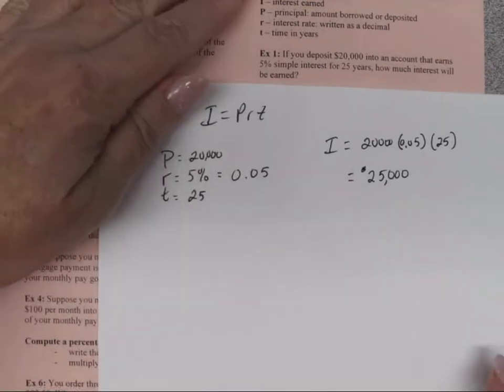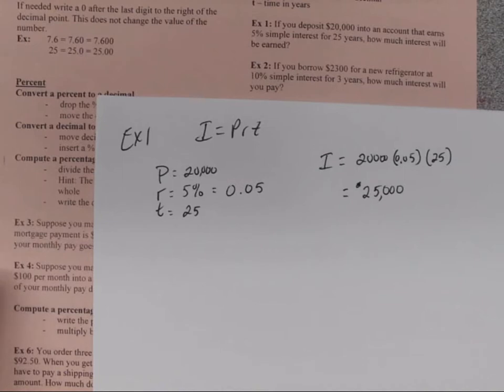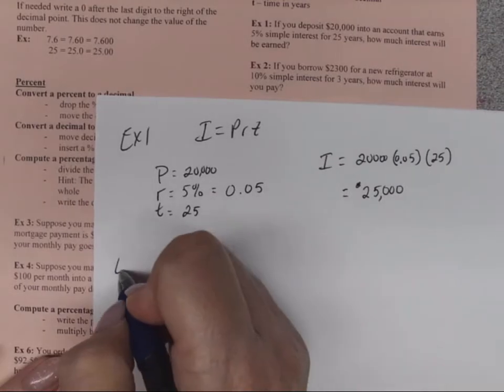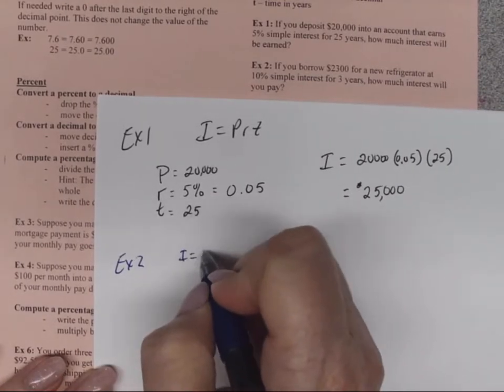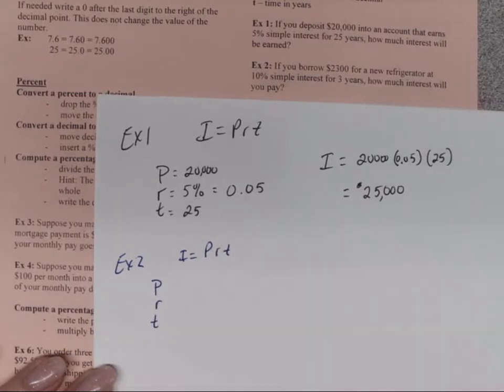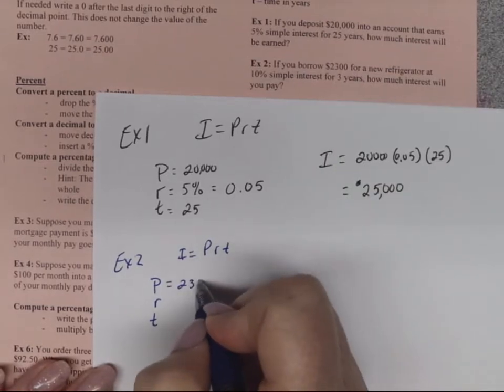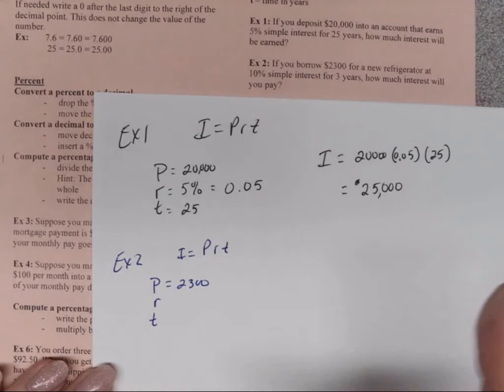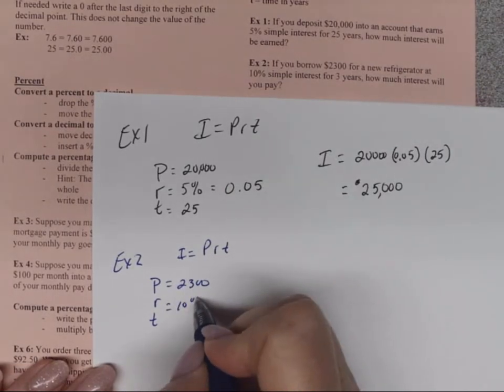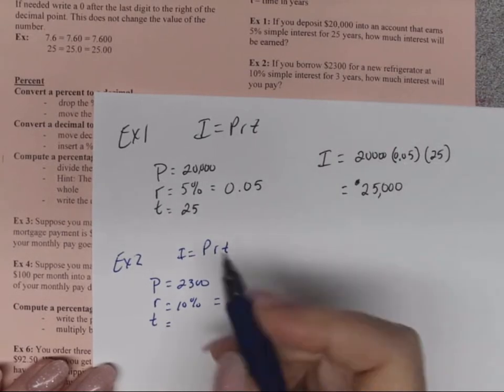Alright, let's look at example two. If you borrow $2,300 for a new refrigerator at 10% simple interest for three years, how much interest will you pay? So last one, we were earning it. This time we're paying it. So I need to know P, R, and T. We borrow $2,300, so that is my principal, at 10% simple interest, so that's 10%, which will be 0.10, and it's for three years.